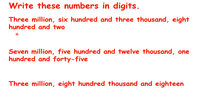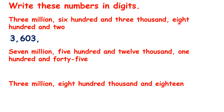Let's see if we can write the numbers shown here in digits. We have three million, so we can write a three and then a comma. Then we read the number in words up until we see thousand, and we have six hundred and three thousand. Then we look at the rest of the number, so that's eight hundred and two.